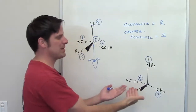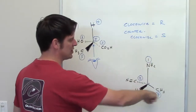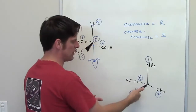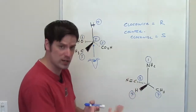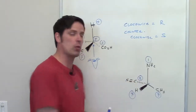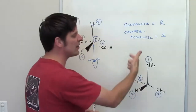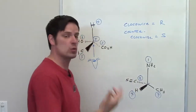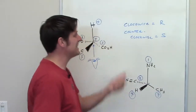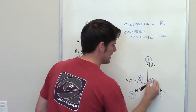In this case, priority group number four is pointing three-dimensionally towards us. If we trace the circle going from one to two to three, it looks counterclockwise, so you might be tempted to think that's S. But remember, group four is pointing towards us, so we have to imagine what the circle would look like if group four were pointing away from us — as if we were staring at this molecule from the other side. As you can hopefully see, it would indeed be clockwise, which means this stereocenter is R.